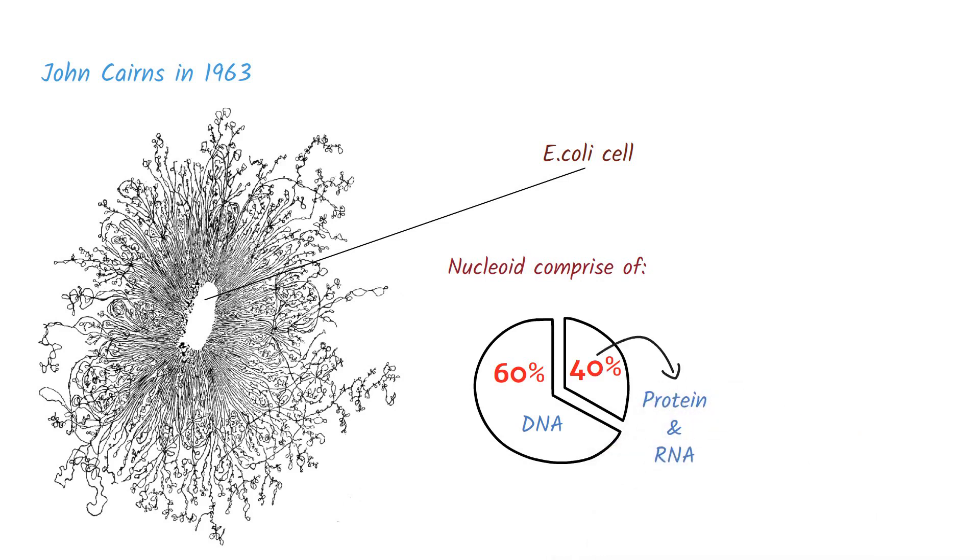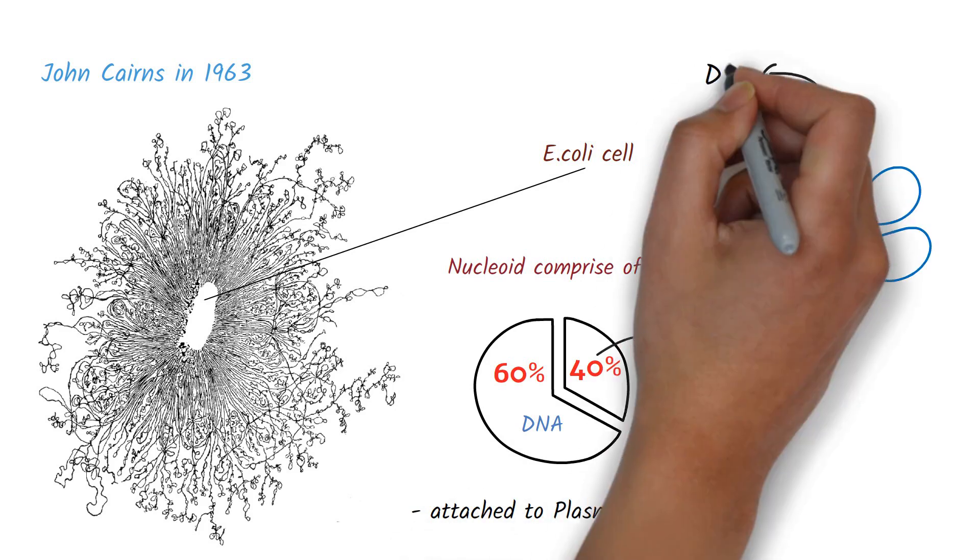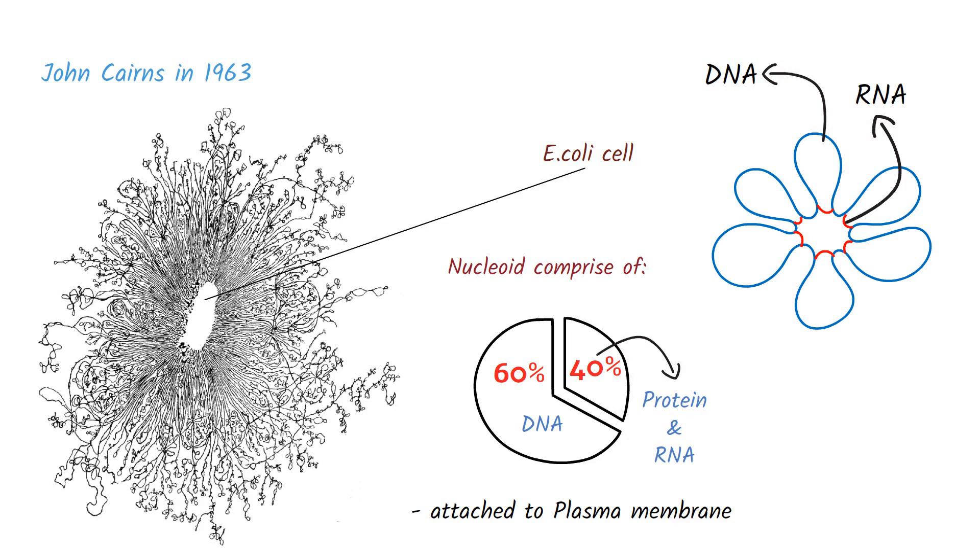In many cases, the DNA is found to be attached to the plasma membrane. The foldings of DNA are held by RNA and determine the shape and number of foldings.